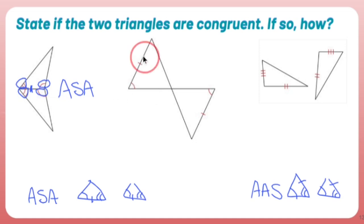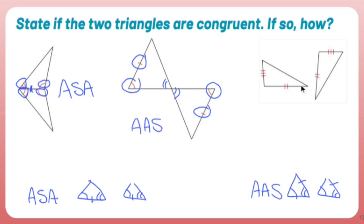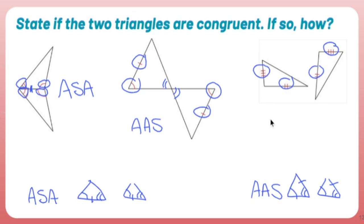The third pair has only two sides — no angles, no right angle markings, nothing else. I can't prove anything from that. So the first pair is congruent by ASA, the second by AAS, and the third cannot be determined — not enough information with only two sides.